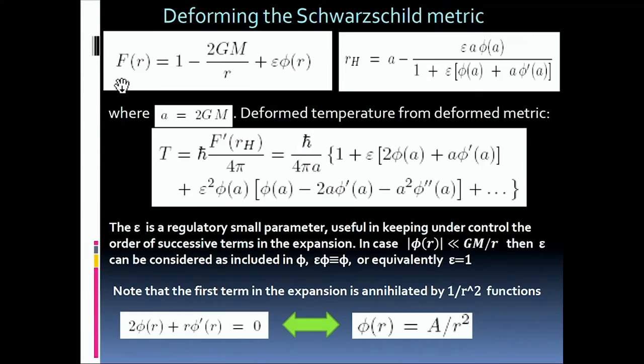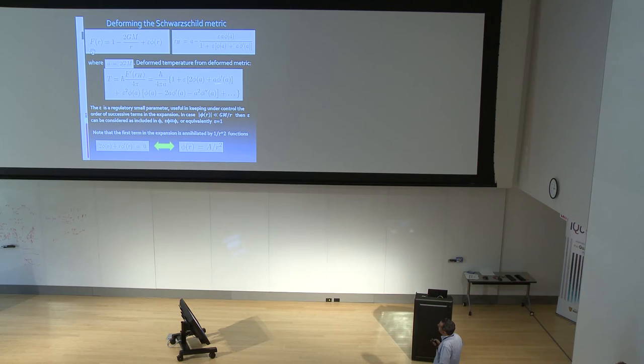So we would like to deform this Schwarzschild metric using a generic function. And of course, if you deform this, you are going to deform also the zeros of the function, so the horizon. The horizon will be this. And you can compute the deformed temperature, which turns out to be this object here. Of course, it depends on the form of the deformation function phi. By the way, epsilon is essentially a small parameter useful in the expansion of this expression.